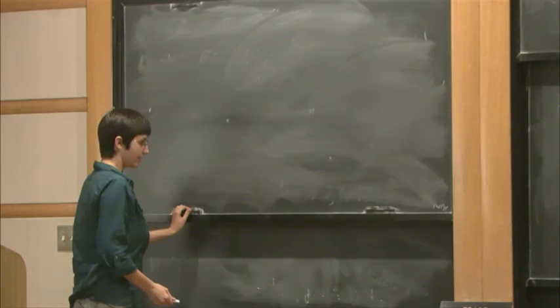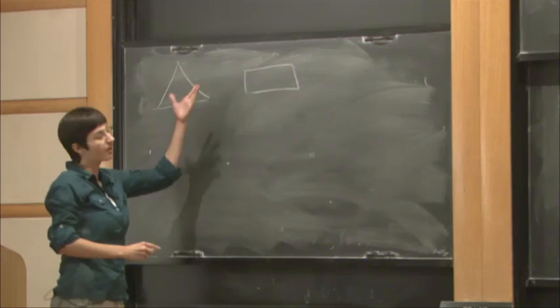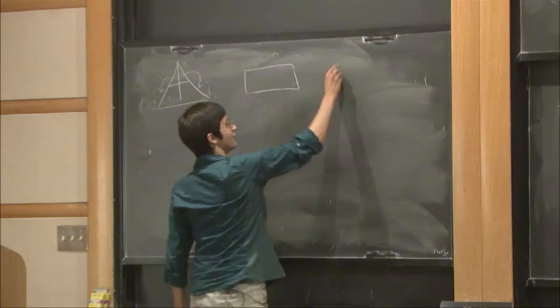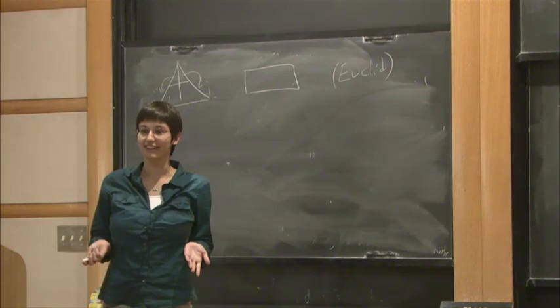The most classical example of this is with polygons. When are two polygons scissors congruent? Well, they obviously have to have the same area, and in fact it turns out that that's the only scissors congruence invariant. For instance, this is a rearrangement of the triangle into the rectangle. And that result is due to Euclid, so it's quite old.